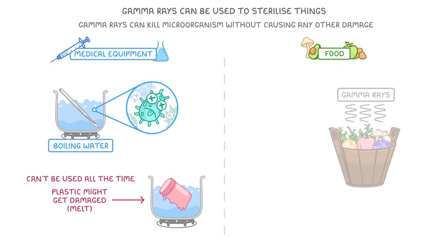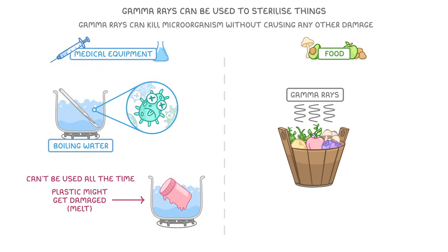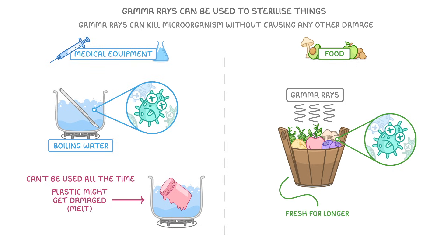This is the same reason that we can use gamma rays to sterilize food. It kills all of the harmful microbes without altering the food in any way, and so it keeps all of our food fresh for longer, because there are no microorganisms left to start breaking it down, and it's still perfectly safe to eat.